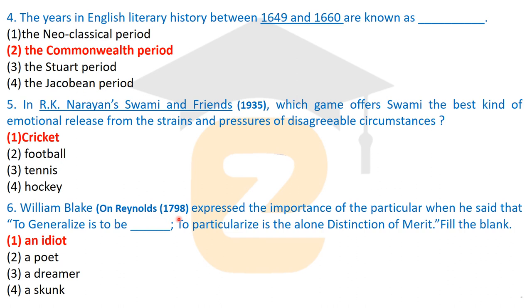Question six: which work published in 1798 expressed the importance of the particular with the statement 'to generalize is to be an idiot; to particularize is the alone distinction of merit'? The correct answer is William Blake's 'Annotations to Reynolds,' published in 1798, in which Blake expressed his views about the importance of the particular.